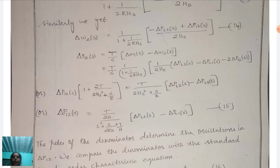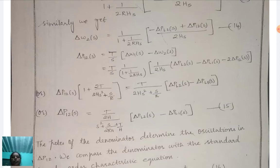The resulting tie-line power equation is: del P_12(s) × (1 + 2T / 2H·s²  + s/R) = T / 2H·s² + s/R × [del P_L2(s) − del P_L1(s)]. Therefore, del P_12(s) = [T/2H] / [s² + s/(2RH) + T/H] × [del P_L2(s) − del P_L1(s)]. This is equation number 15.